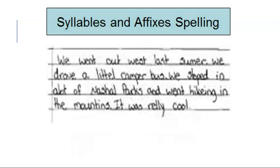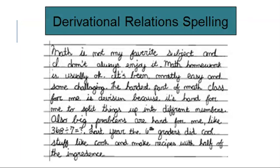In the syllables and affixes spelling stage you can see much more advanced work — the child is using prefixes and suffixes, writing longer sentences, and beginning to write paragraphs. This isn't something you'll see with preschoolers, but we're going through all the stages here. The last stage is derivational relations spelling, or conventional spelling, where the child even writes in cursive, spelling every word correctly, using contractions, capitalizations, punctuation, prefixes, suffixes, and even symbols for numbers.